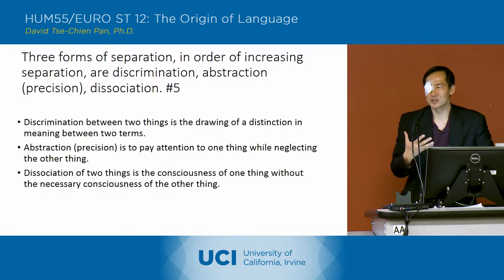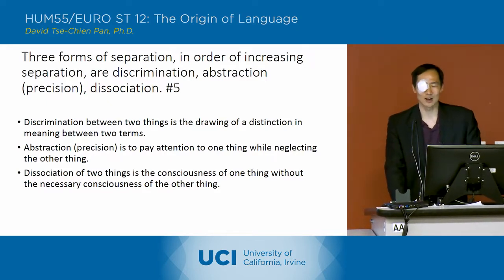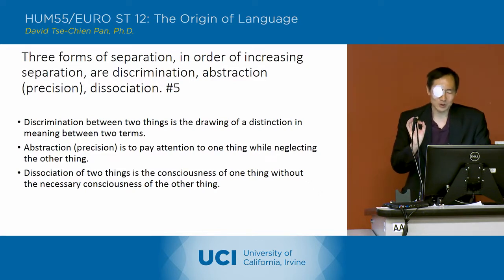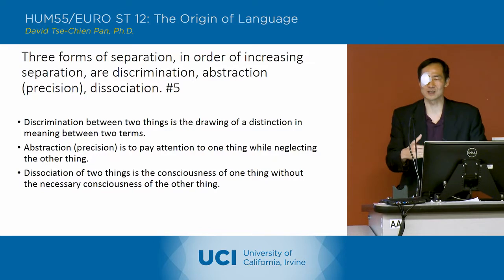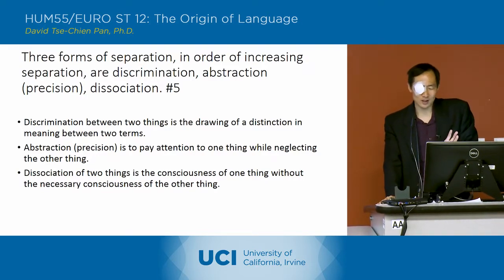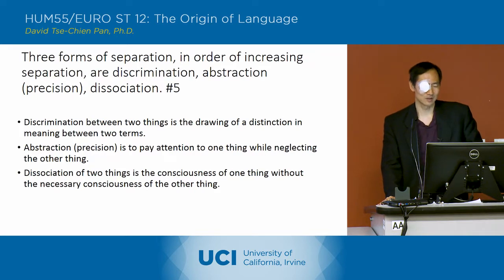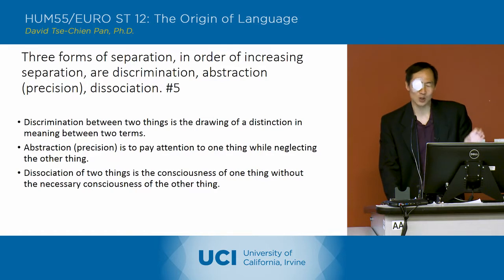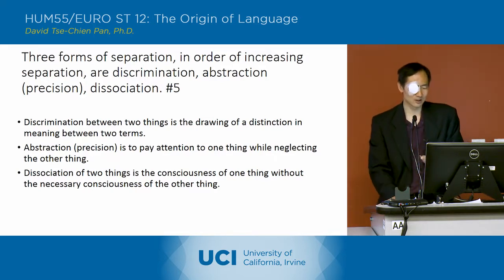I'm just going to sum this up and try to get the concepts clear. Discrimination between two things is the drawing of a distinction in meaning between the two terms. Abstraction is to pay attention to one thing while neglecting the other. And the most separation, dissociation, is the consciousness of one thing without the necessary consciousness of the other thing.